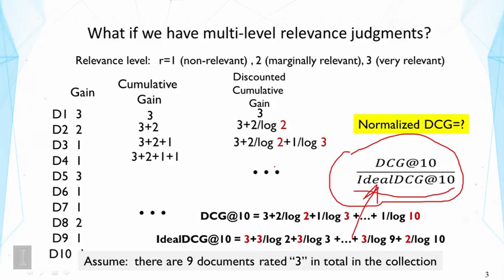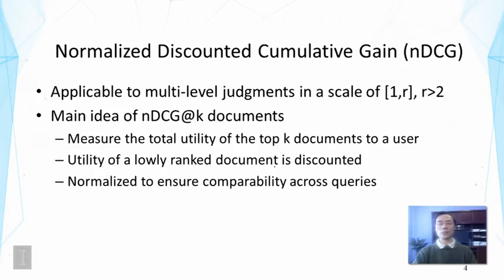In a more general way, this is basically a measure that can be applied to any ranking task with multiple levels of judgments. The scale of the judgments can be more than binary. It can be multiple levels like one, zero, five, or even more, depending on your application.